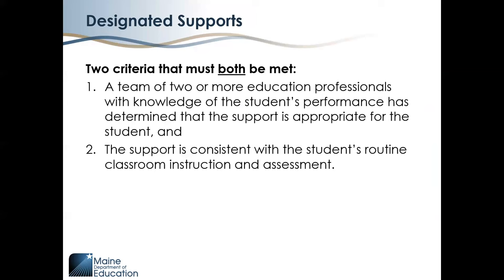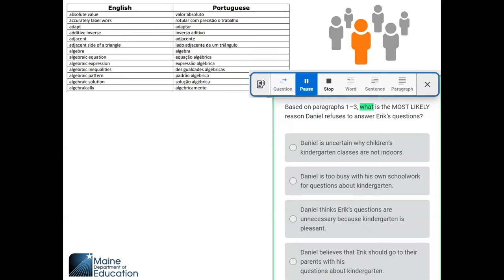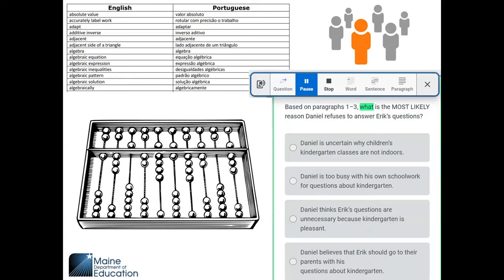Designated supports are available to students based on the following two criteria being met. One, a team of two or more education professionals with knowledge of the student's performance has determined that the support is appropriate for the student. And two, the support is consistent with the student's routine, classroom instruction, and assessment. Designated supports that need to be entered into the assessment platform by an assessment coordinator include the use of text-to-speech, small group or individual setting, bilingual word glossary for multilingual learners, and mathematical supports.